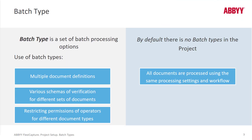A batch type is a set of batch processing options. I like to call a FlexiCapture batch type a project within a project. A lot of people new to FlexiCapture don't take advantage of batch types, and their system might end up less secure and performing less effectively because of that.